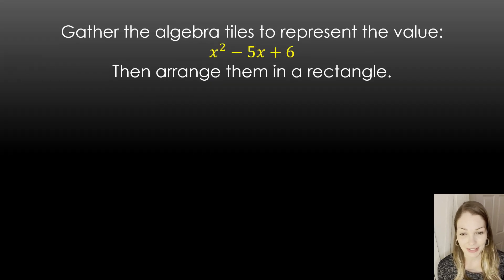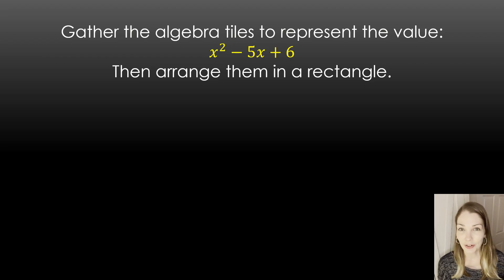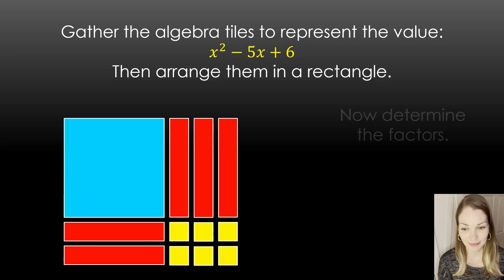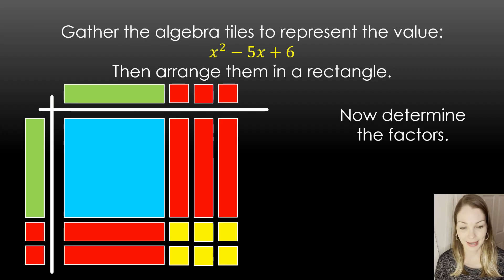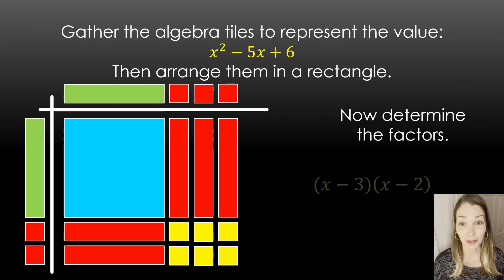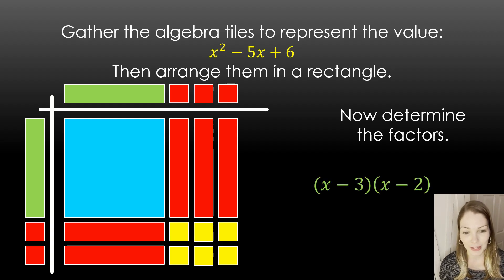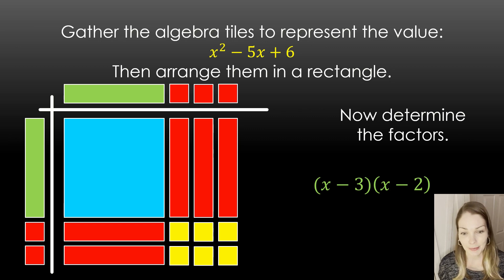Let's throw in some negatives. Go ahead and grab tiles for x squared minus 5x plus 6 and try to make a rectangle. Here's the arrangement — the factors are x minus 3 and x minus 2. We have to be careful with what we use for our factors. We have to think about what times what will give us this negative and this positive, and it's important for students to think through how that's going to all work together.